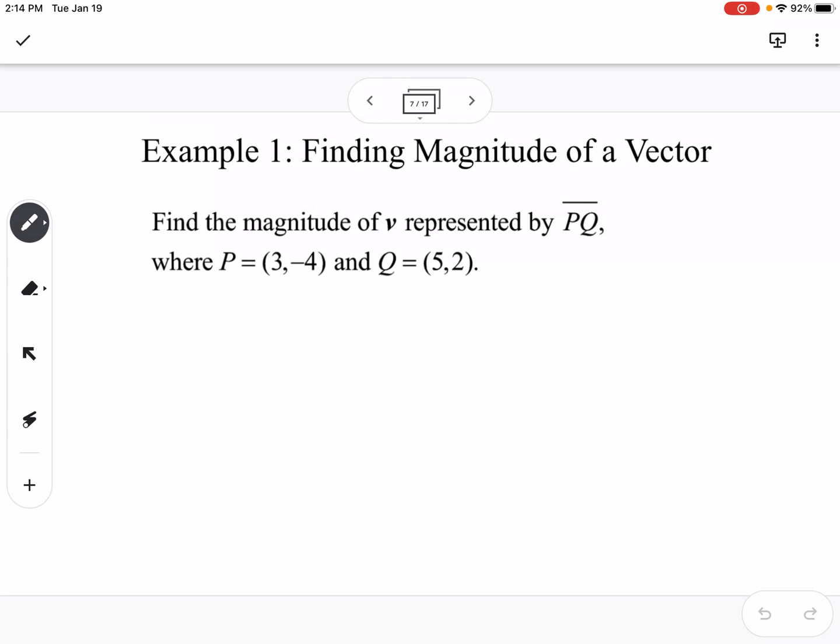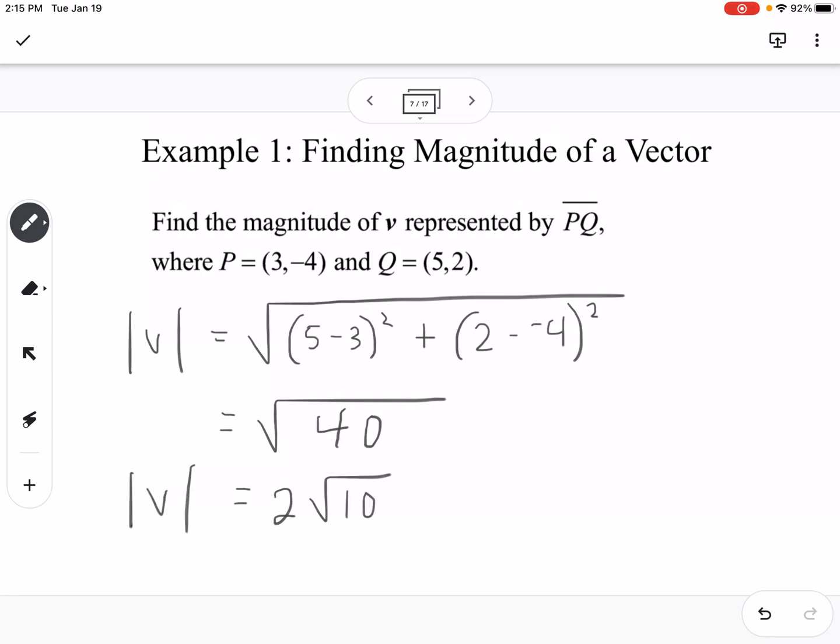An example: Find the magnitude of vector V represented by PQ, where P is (3, -4) and Q is (5, 2). We're going to find the magnitude, so the notation for magnitude looks like absolute value signs. We're going to take the square root of (5 - 3)² plus (2 - (-4))², so that's going to give me the square root of 40, which we can simplify into 2√10. That would be the magnitude of vector PQ.